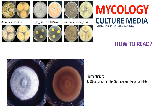For pigmentation, we observe it on the surface and the reverse plate. Take note and highlight this: you have your observation on the surface and your observation on the reverse plate. The surface is where we read the colony on the culture media — we already did that in bacteriology. But in mycology, we also observe the reverse plate. So for example, this is your surface — you need to flip the culture media, and the bottom part is what we call the reverse plate, where you observe the pigmentation.